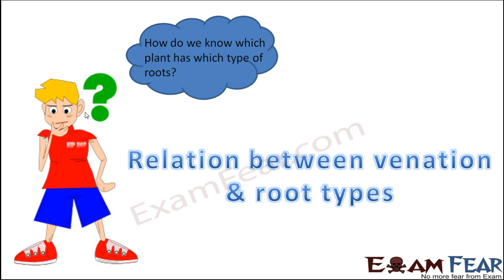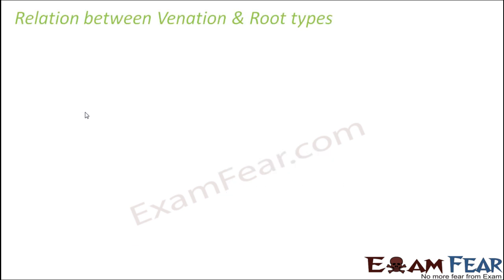Here we are going to talk about the relation between venation and root types. What is venation? It is the arrangement of veins on the leaf. There is a relationship between how veins are arranged on the leaf and the type of roots present for that plant, and we will try to understand that relation.